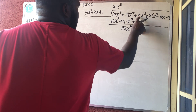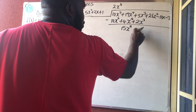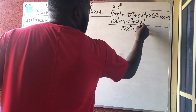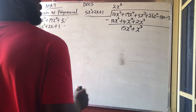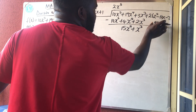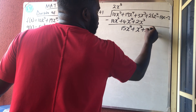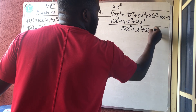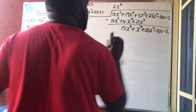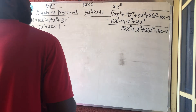Minus times plus is minus, so 3 minus 2 is 1, but we write x³ not 1x³. The terms without like terms — 26x², −13x, and −2 — are brought down because they have nothing to subtract against.